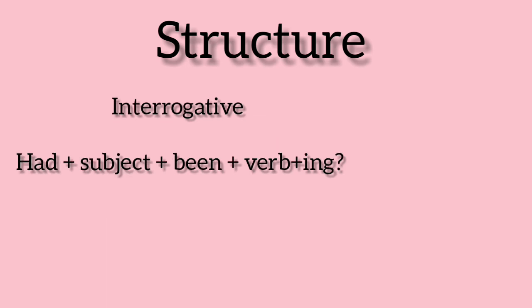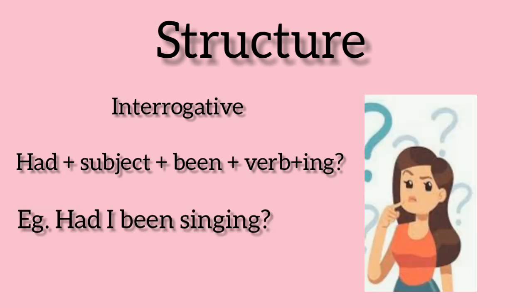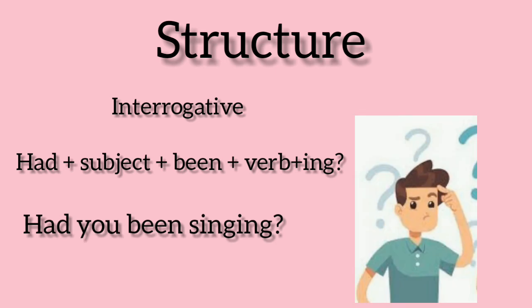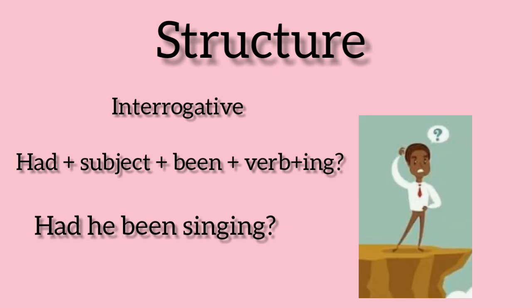For interrogative sentences, we start with had plus the subject plus been plus verb in the -ing form, and we end the sentence with a question mark. For example: 'Had I been singing?' 'Had you been singing?' 'Had he been singing?'